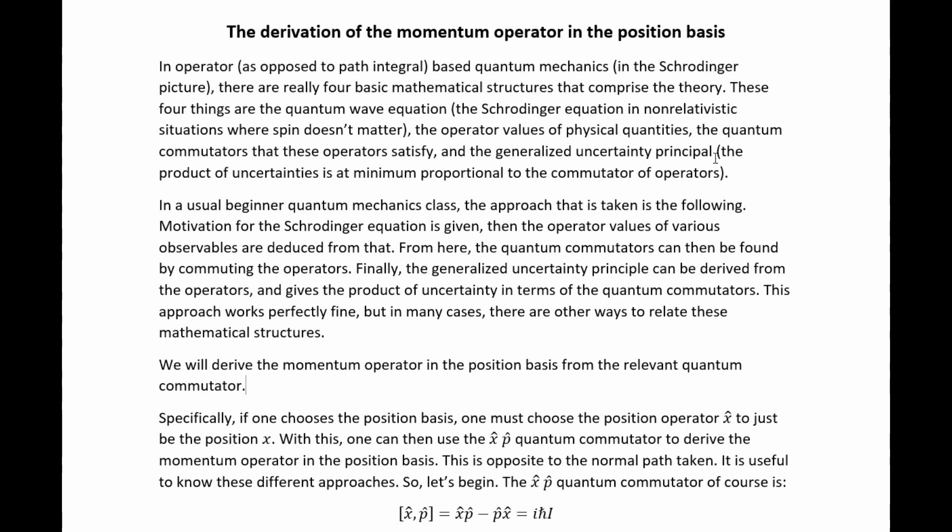The generalized uncertainty principle, if you don't remember, says that the product of uncertainties associated with two different observables has a minimum and it gives the specific value of that minimum. The punchline though is that it's proportional to the commutator of operators. It does tell you the specific value.